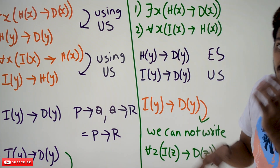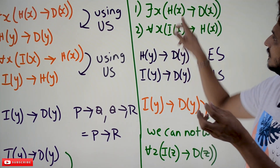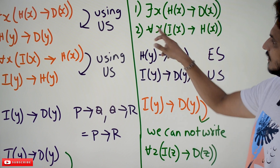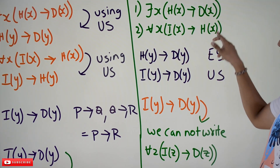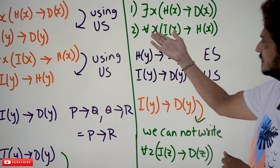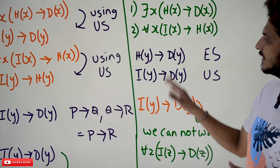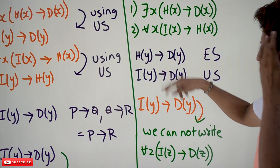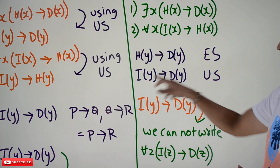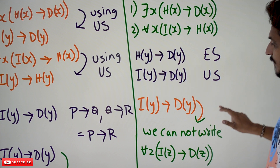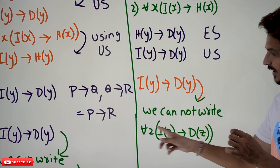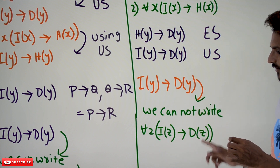There exists x means at least one subject is going to be true for this statement — that can be written as h(y) implies d(y). For all x, i(x) implies h(x) can be written as i(y) implies h(y), from universal specification. From these two statements we can conclude i(y) implies d(y) — using p implies q, q implies r. But from i(y) implies d(y), we cannot write for all z, i(z) implies d(z).